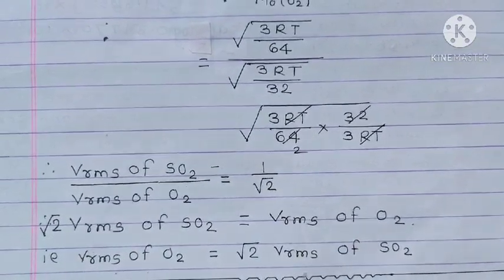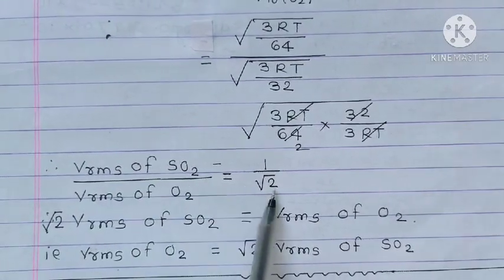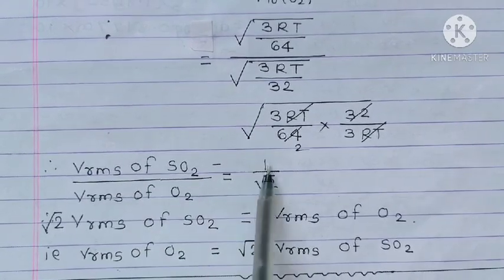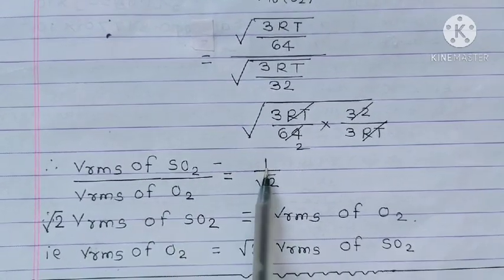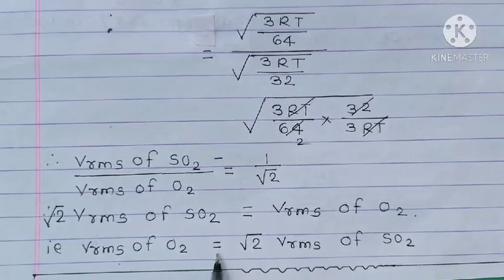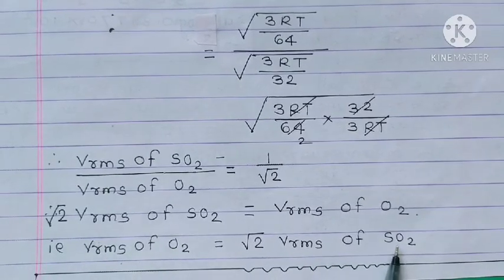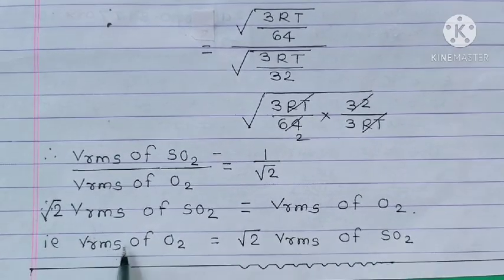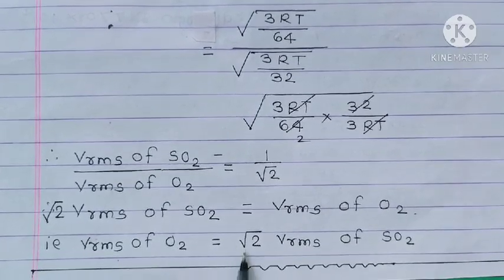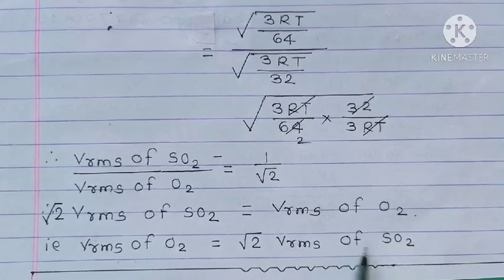Cross multiplication gives root 2 into Vrms of SO2 is equal to Vrms of O2. So Vrms of O2 is equal to root 2 times Vrms of SO2. RMS speed of oxygen is equal to root 2 times RMS speed of SO2.